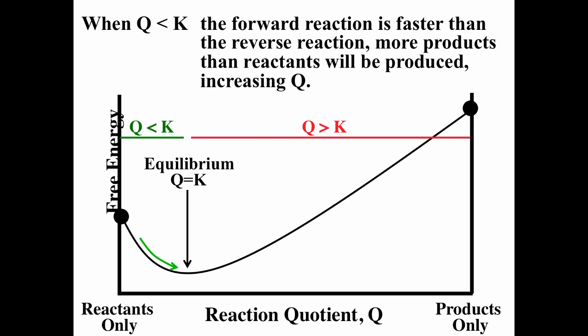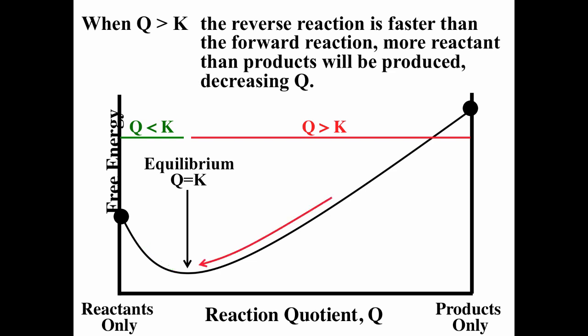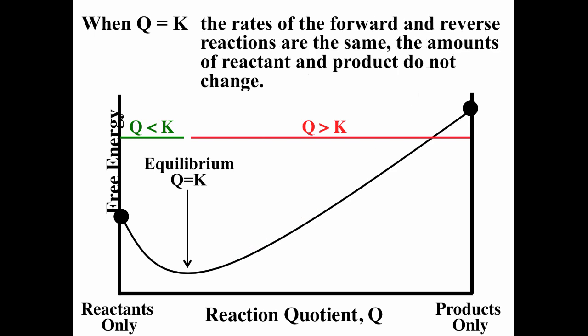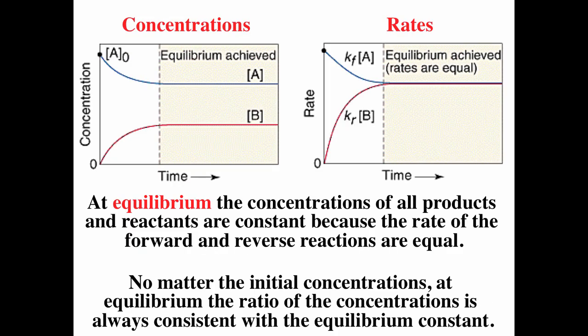If Q is less than K, the forward reaction is faster than the reverse reaction, driving the system toward products. If Q is greater than K, the reverse reaction is faster than the forward reaction, driving the system back toward reactants. When Q equals K, the rates of the forward and reverse reactions are equal — that is equilibrium. Macroscopically, concentrations are constant.